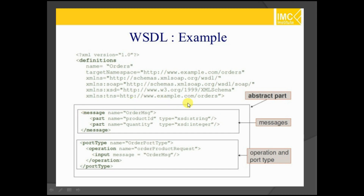This is the abstract part. Whatever content is specified here is called the abstract part. This is called definitions — a visible definition — which has a name. The name of this WSDL is 'orders', as specified here. And namespaces that refer to SOAP services will be taken from the SOAP services; you have to specify all the namespaces.